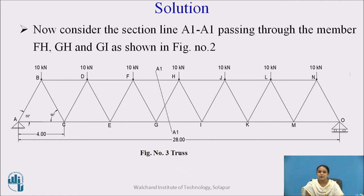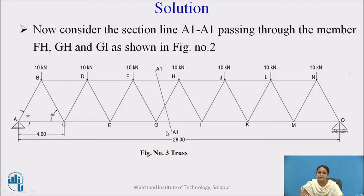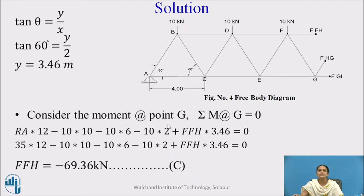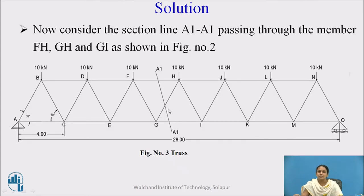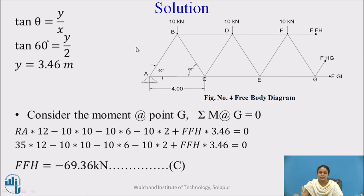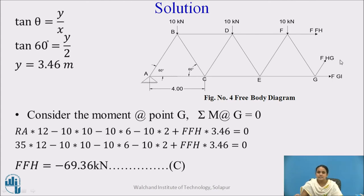We have to pass the section line through only the three members where we need to find the forces. So section line AA is passed through members FH, HG, and GI. After passing the section line, you can consider either part of the truss. Here the first part is considered, with the already-calculated reaction at support A. The inclination of member HG is 60 degrees because all triangles are equilateral, so the inclination of each member is 60 degrees.